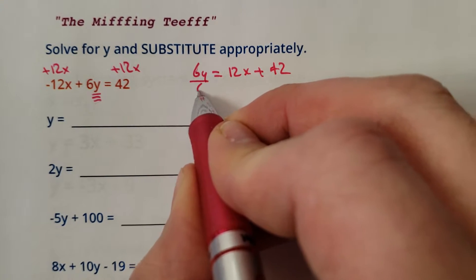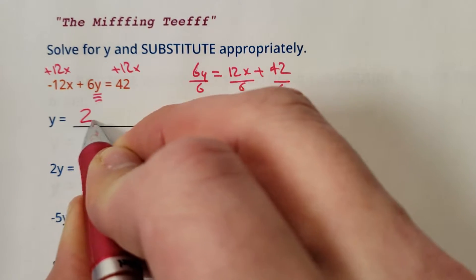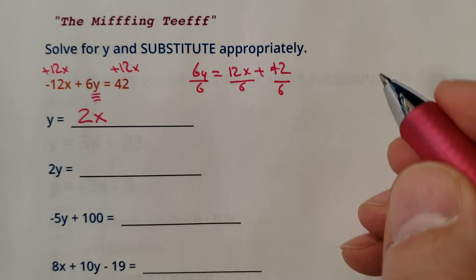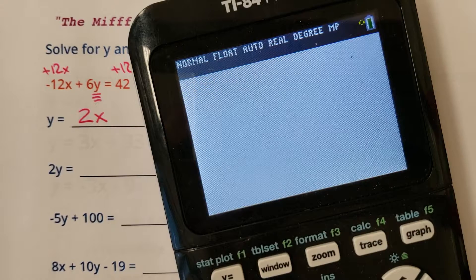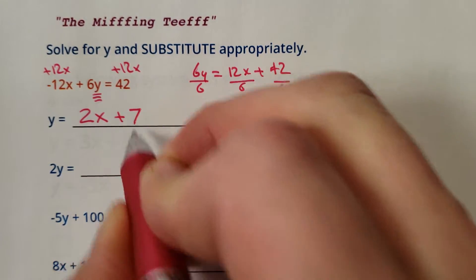Divide everything by 6. y is going to equal 2x and then 42 divided by 6. Last time I checked, I believe is 7. Let me double check here. Yeah, we got it. So y equals 2x plus 7.